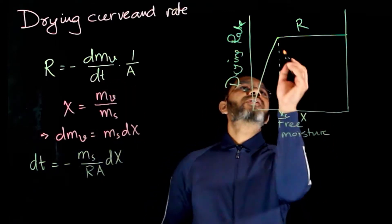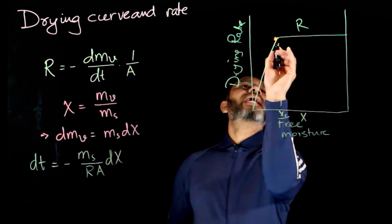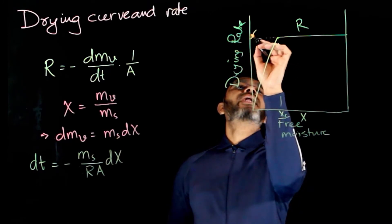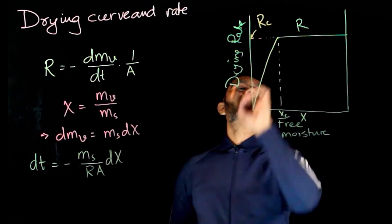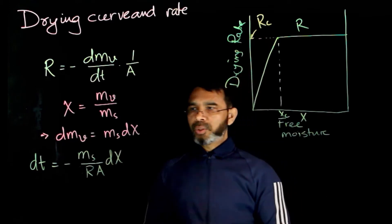Now, we define this constant rate here, rate during the constant rate period, to be defined as rc. Now, we take two scenarios.